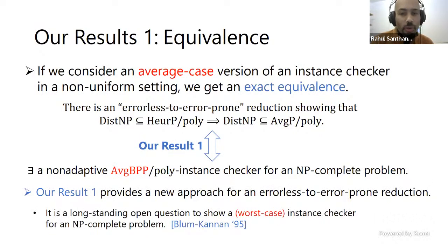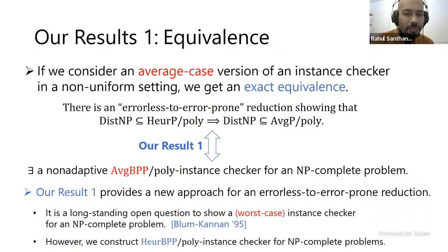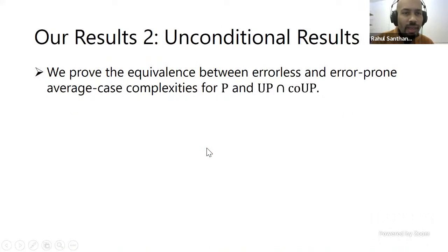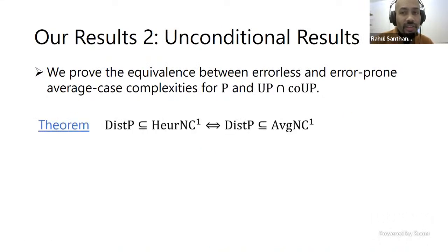This provides a new approach for errorless-to-error-prone reduction and relates our problem to a well-known open problem about instance checking NP. We can unconditionally construct a somewhat weaker error-prone instance checker — for heuristic-BP/poly instance checkers, we can construct them unconditionally. Our second result gives some unconditional results for the equivalence between errorless and error-prone average case complexity for P, UP, and co-UP.